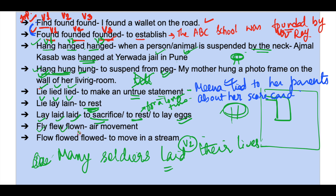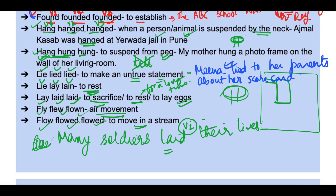Fly, flew, flown is about aerial movement — air movement. Flow, flowed, flowed is about movement in a stream, that is water or any liquid. For birds we use fly — birds fly. And water flows.